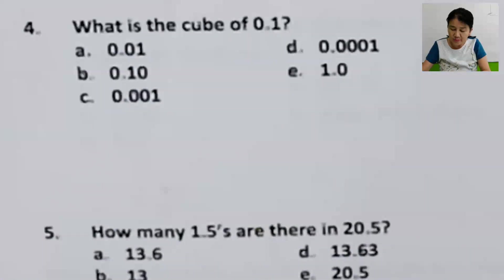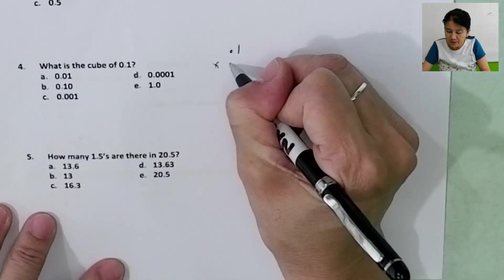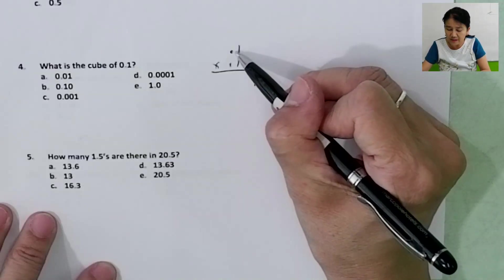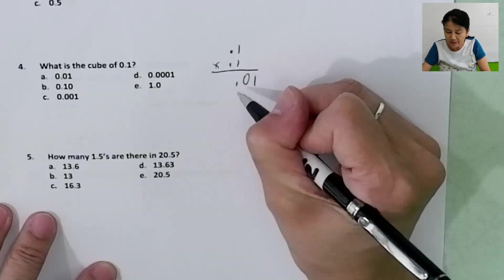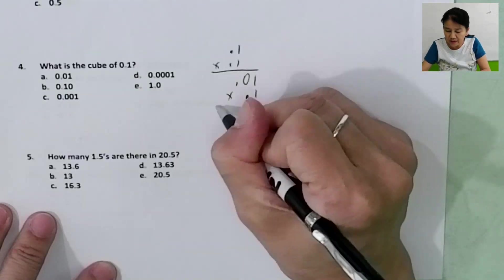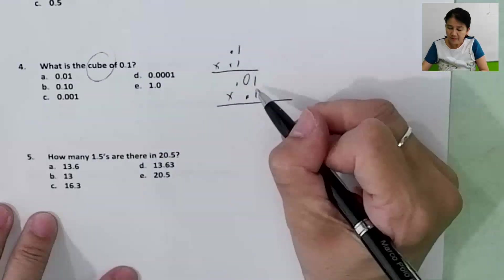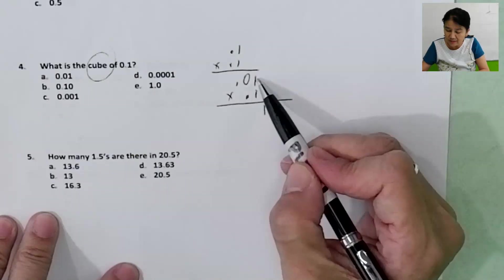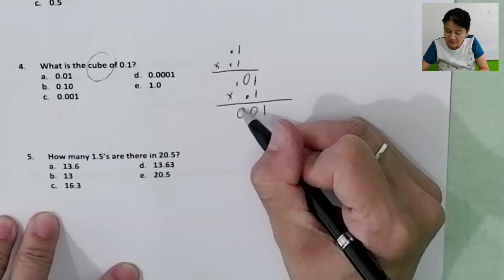Problem number 4. What is the cube of 0.1? So 0.1 times 0.1 is 1 times 1, which is 1. Count the number of decimal places: 1, 2 — giving 0.01. Then times 0.1 again because you're cubing it. 1 times 1 is 1. Count the decimal places: 1, 2, 3 — giving 0.001.